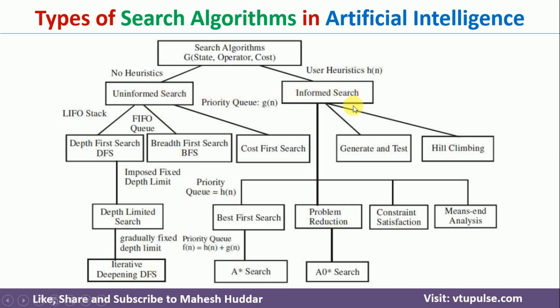Coming back to informed search algorithms, they are categorized into mainly three groups. First one is generate and test. Second one is hill climbing. Third one is divided again into different groups: best first search algorithm, problem reduction algorithm, constraint satisfaction algorithm, and means-ends analysis algorithm. The best first search algorithm is again categorized into A* search algorithm, and problem reduction is categorized into AO* and OR* search algorithms. All these algorithms I have discussed in detail with solved numerical examples. Links for those videos are given in the description below.